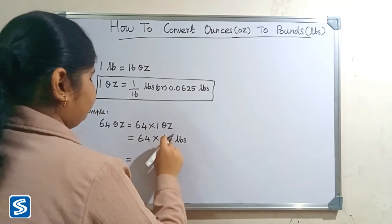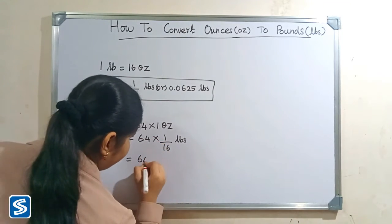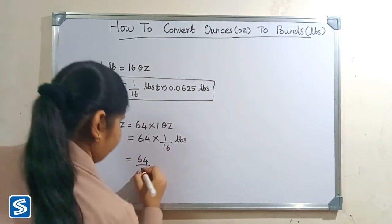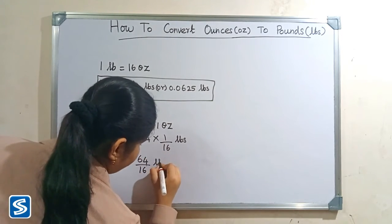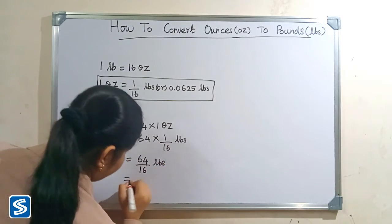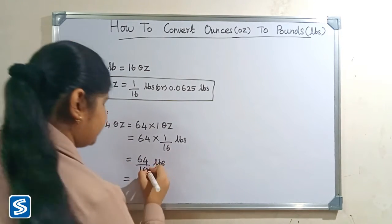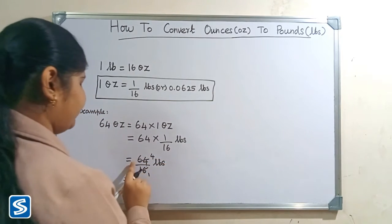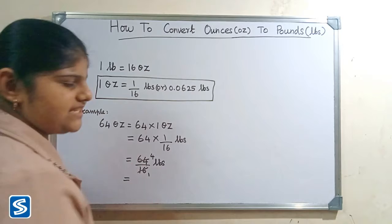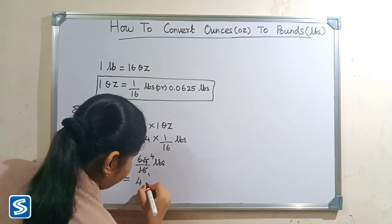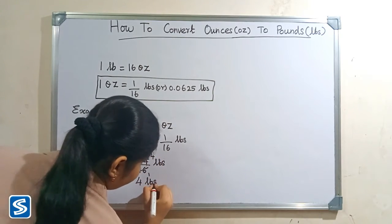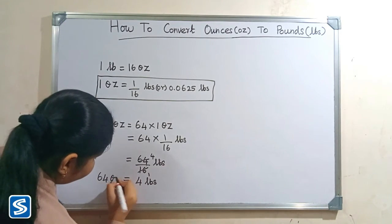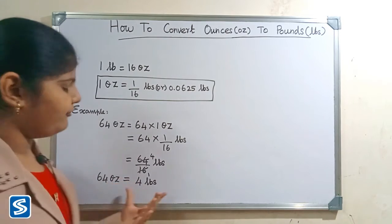64 × 1 will be 64. So, 64 ÷ 16 pounds. Sixteen fours are 64. So when we divide 64 by 16 pounds, our answer will be 4 pounds. So 64 ounces is equal to 4 pounds.